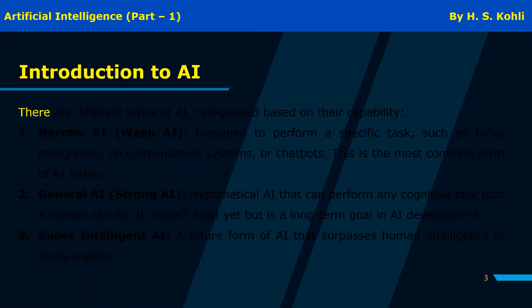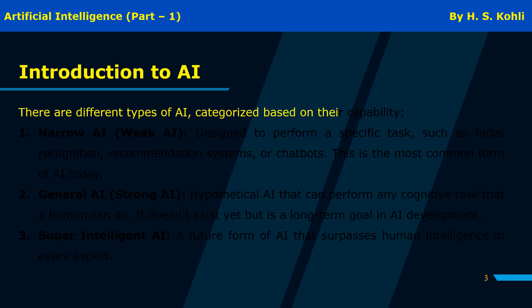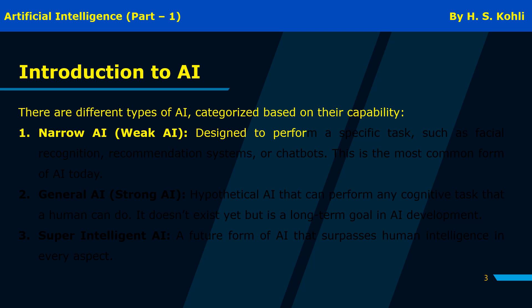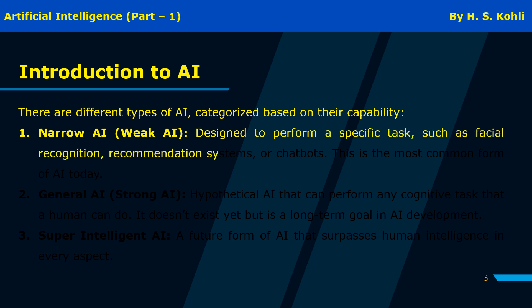There are different types of AI, categorized based on their capability. First, Narrow AI — also called weak AI — is designed to perform a specific task, such as facial recognition, recommendation systems, or chatbots. This is the most common form of AI today.